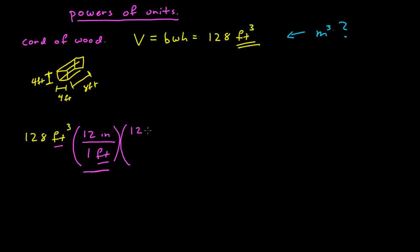But that's okay. This is just the number 1, and so I can multiply this by the number 1 three times: another 12 inches by 1 foot, and then again by another 12 inches by 1 foot. And so these 3 units of feet multiplied together give me feet cubed, which cancel the feet cubed in the numerator.